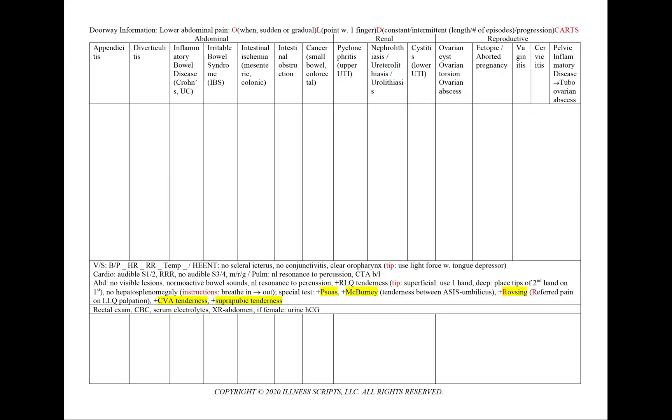For a case of lower abdominal pain, using our mnemonic OLD CARDS, we note the onset — when did it start, and did it come on suddenly or was it more gradual.